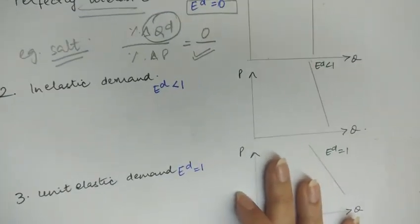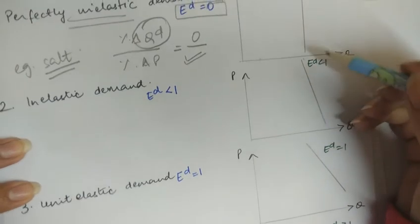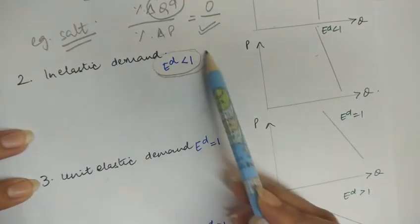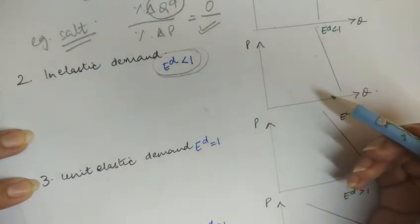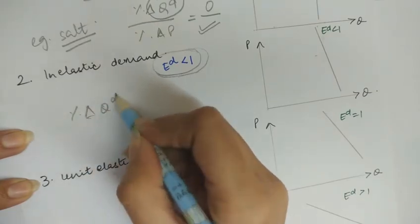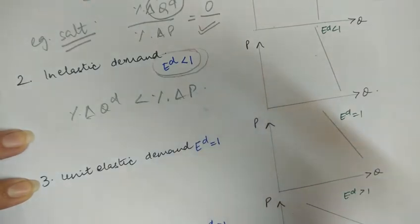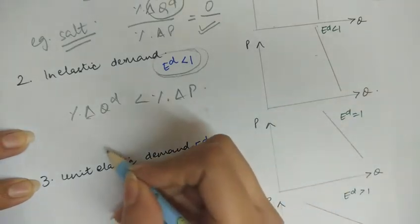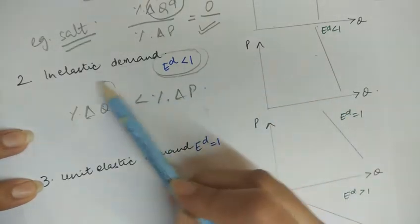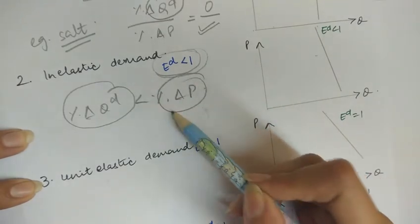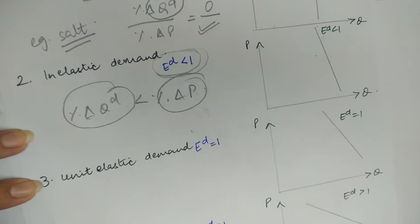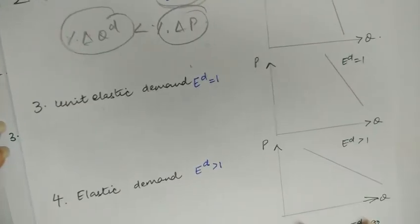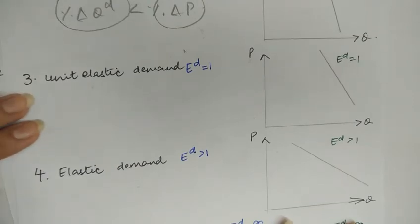Now let's move on to inelastic demand. The curve is steeper but flatter than perfectly inelastic demand. Here the elasticity of demand is less than one — meaning the percentage change in quantity demanded is less than the percentage change in price. An example is sugar. The quantity demanded does change with price, but the change in quantity demanded is always less than the percentage change in price, so elasticity is less than one.